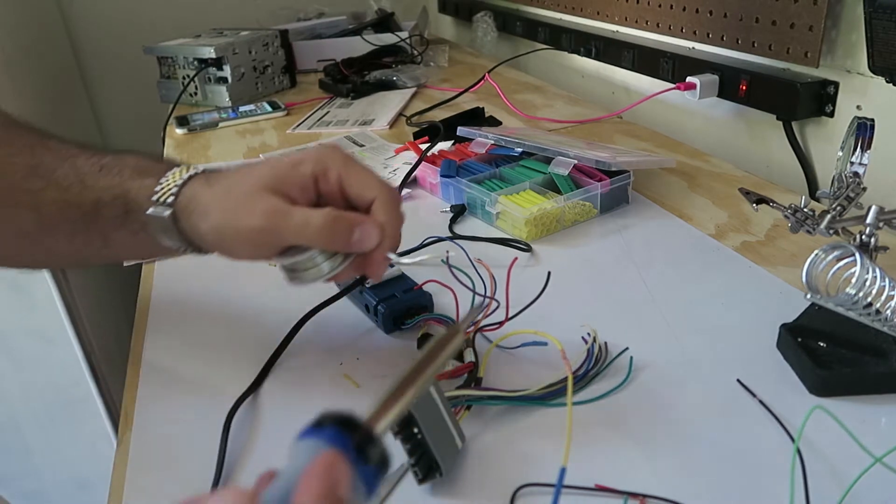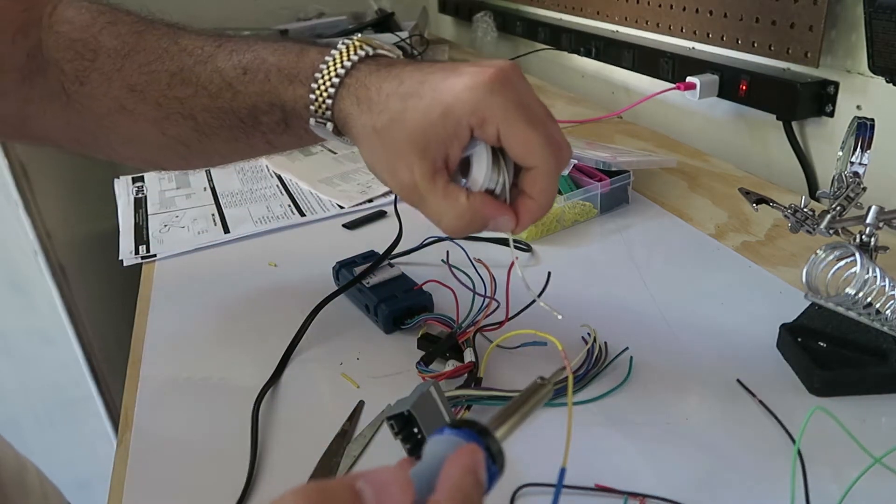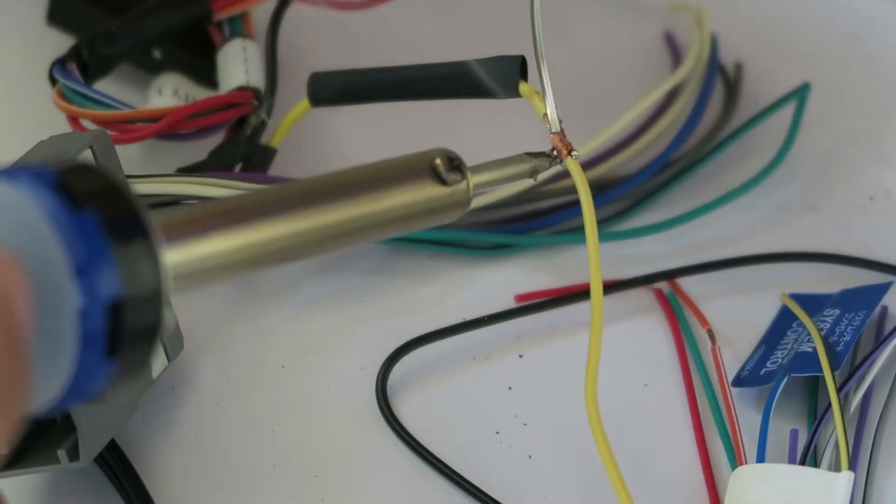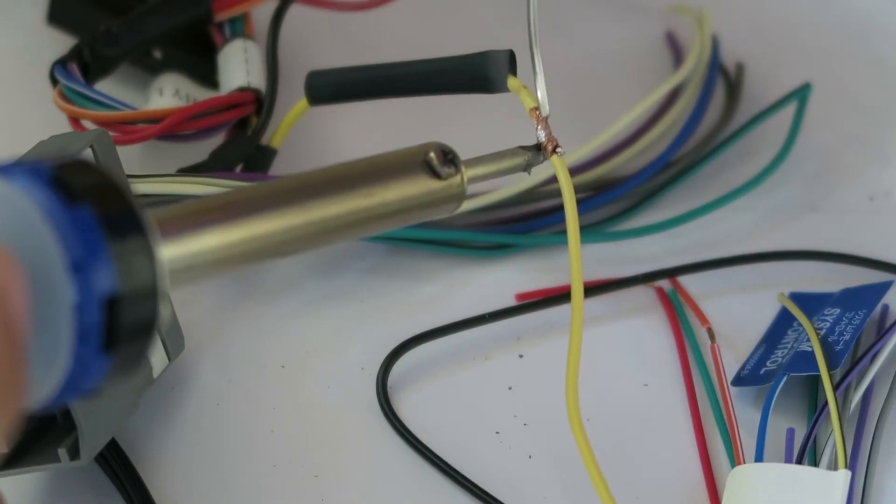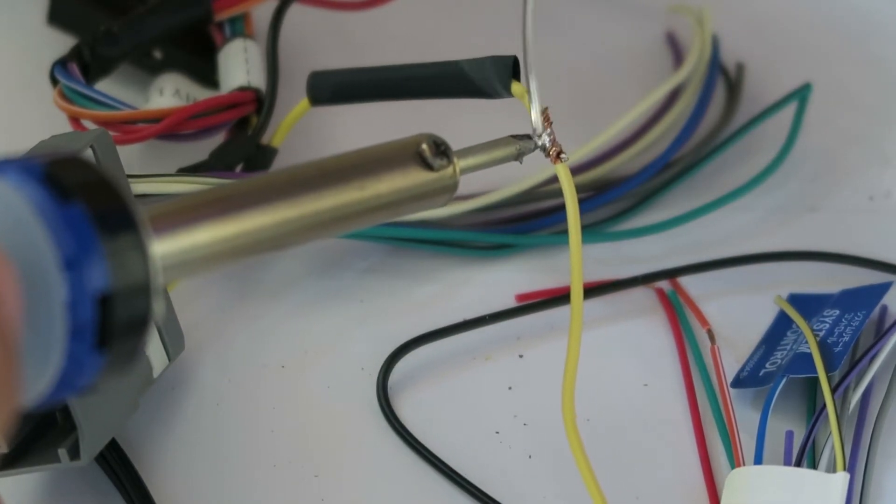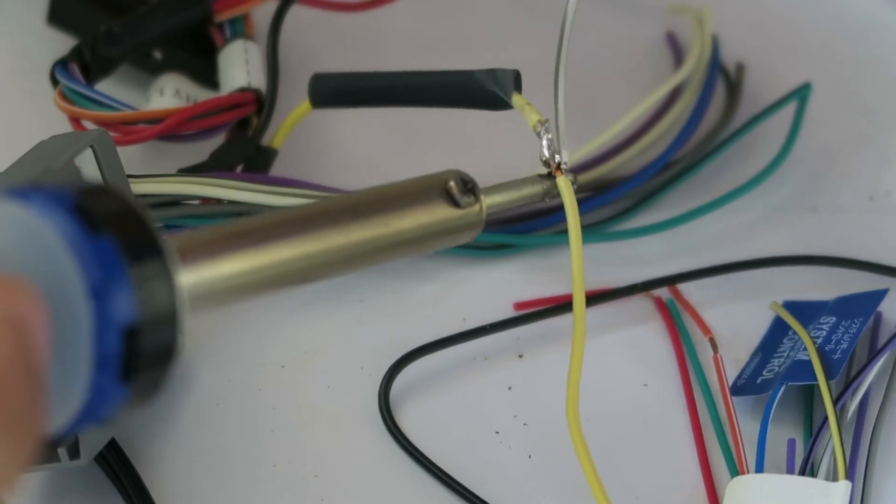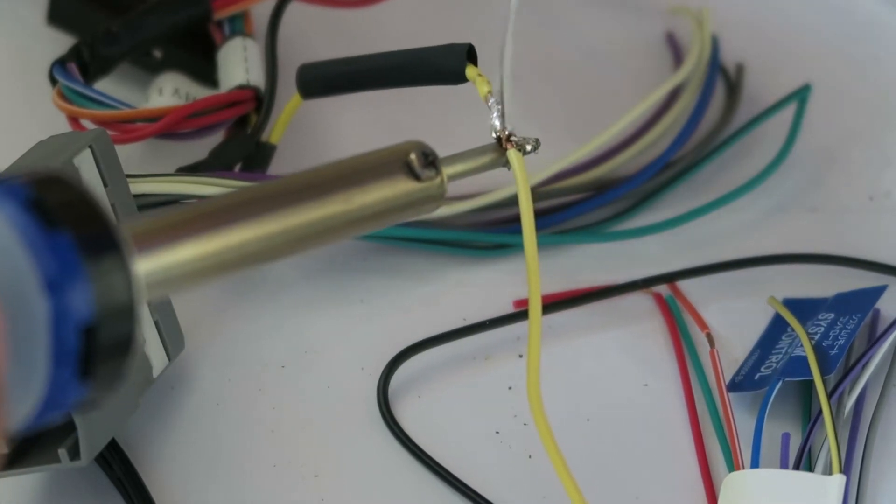Now, I'm going to take my solder and my soldering iron, and all you really have to do is add heat to the wire first, so you're just going to leave the iron on the wire like this, and then apply the solder to it.